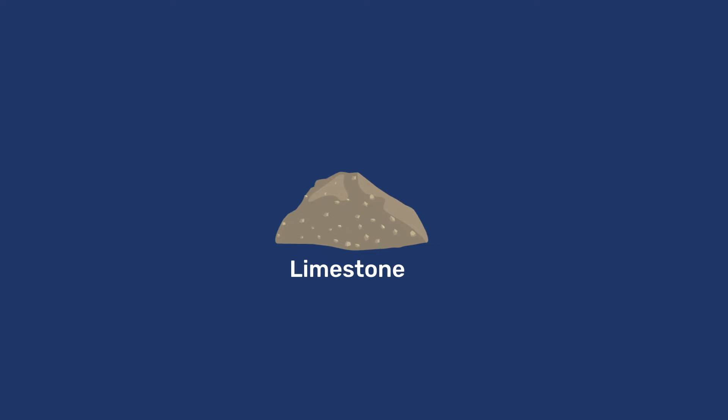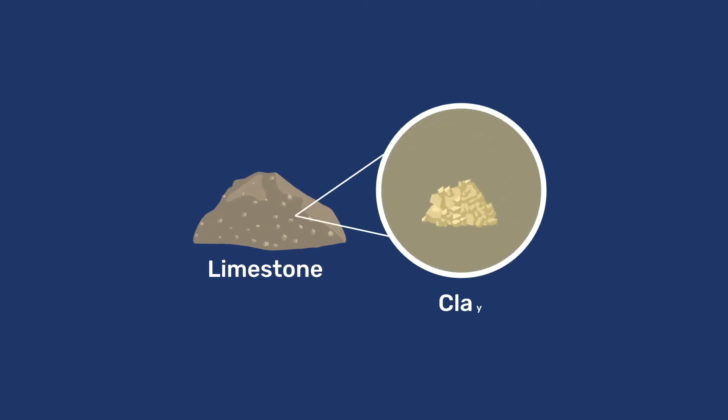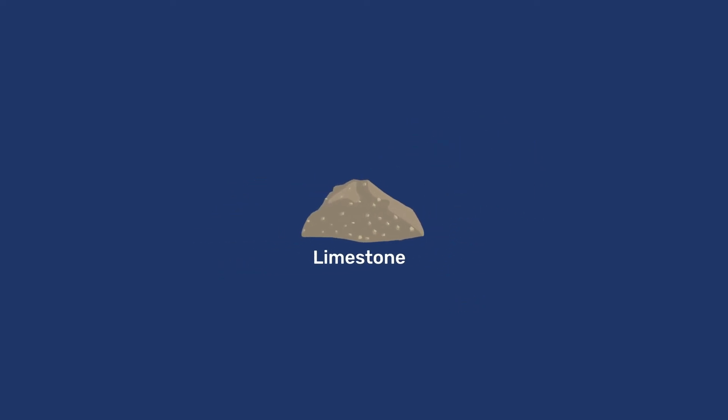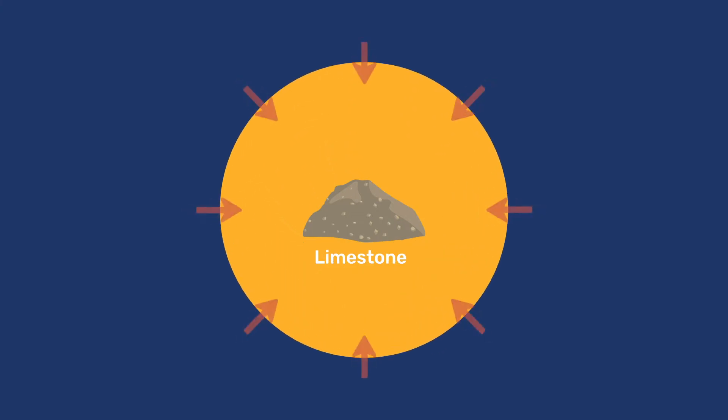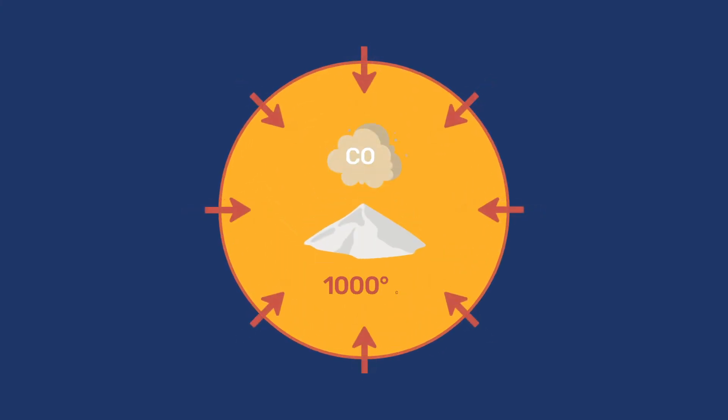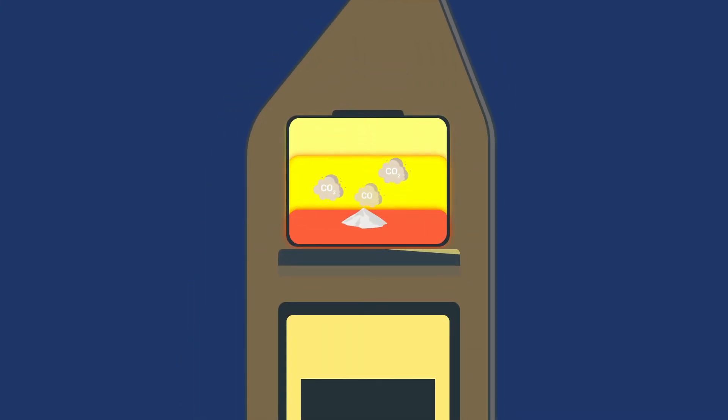A limestone with a rather high clay content, around 20-30%. This explains that natural cements have both a large variation of compositions and limited adequate raw materials availability. In terms of processing, they are calcined around 1000 degrees Celsius.